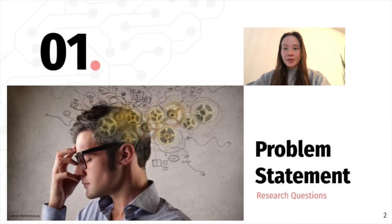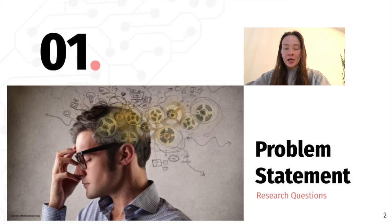Code and new ideas are born in the brains of programmers, so it is very important to monitor its functional state. One way to improve the quality of developers' work is to help them to concentrate better, timely detect a drop in concentration and brain fatigue, which could be done by controlling the level of attention during programming.